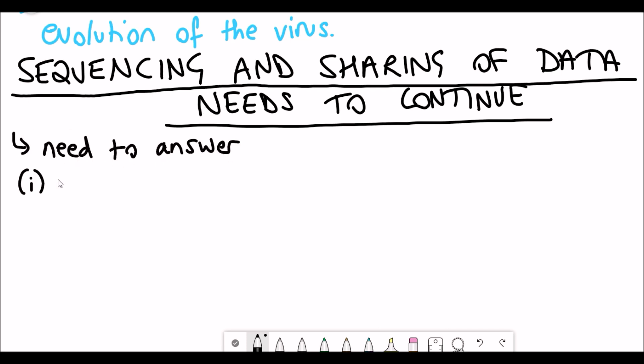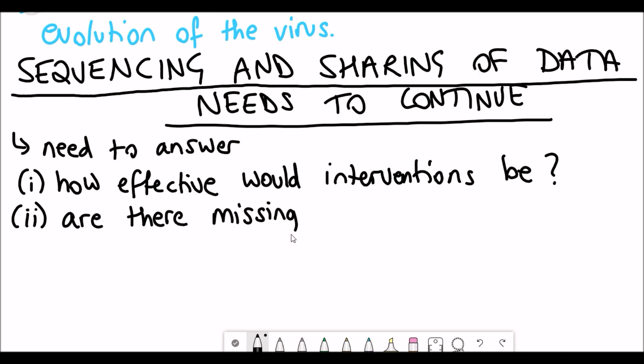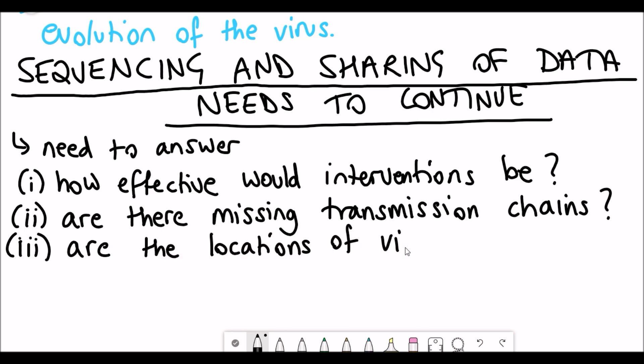So what are these unanswered questions then? Well, one thing we kind of need to work out is how effective would these interventions be in preventing the spread? And are there missing transmission pathways that we've yet to notice besides just the human-human transmission? And are the locations of viral transmission connected?